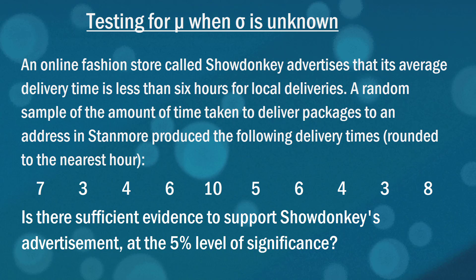Here's a question in which we've provided a data set for you to calculate from scratch. An online fashion store called Show Donkey advertises that its average delivery time is less than six hours for local deliveries. A random sample of the amount of time taken to deliver packages to an address in Stanmore produced the following delivery times rounded to the nearest hour. The question is, is there sufficient evidence to support Show Donkey's advertisement at the 5% level of significance?